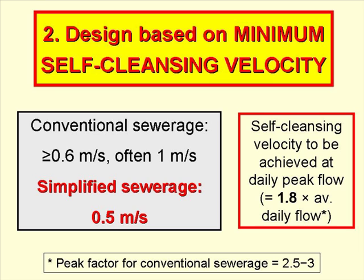We are now going to look at the design of simplified sewerage based on a minimum self-cleansing velocity. This self-cleansing velocity has to be achieved at least once a day, normally at peak flow. With simplified sewerage the peak flow factor is 1.8, whereas with conventional sewerage it is anywhere between 2.5 and 3.